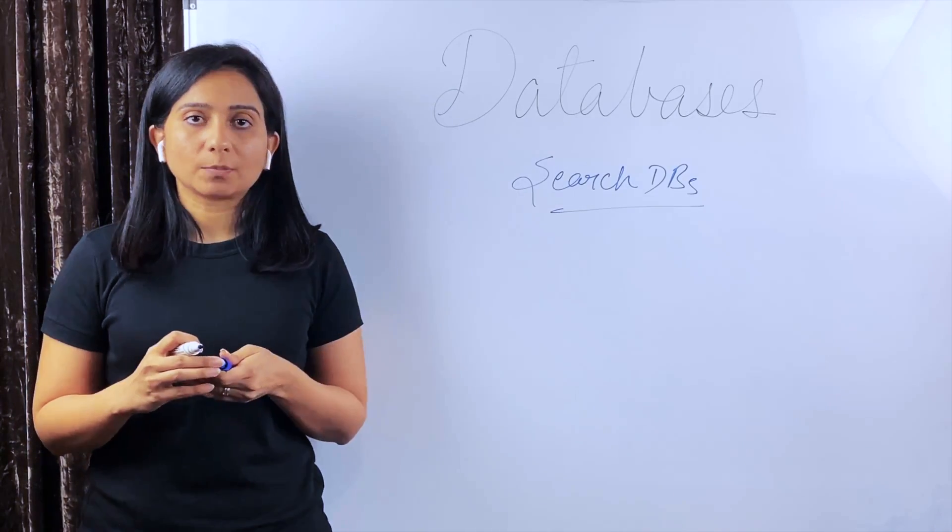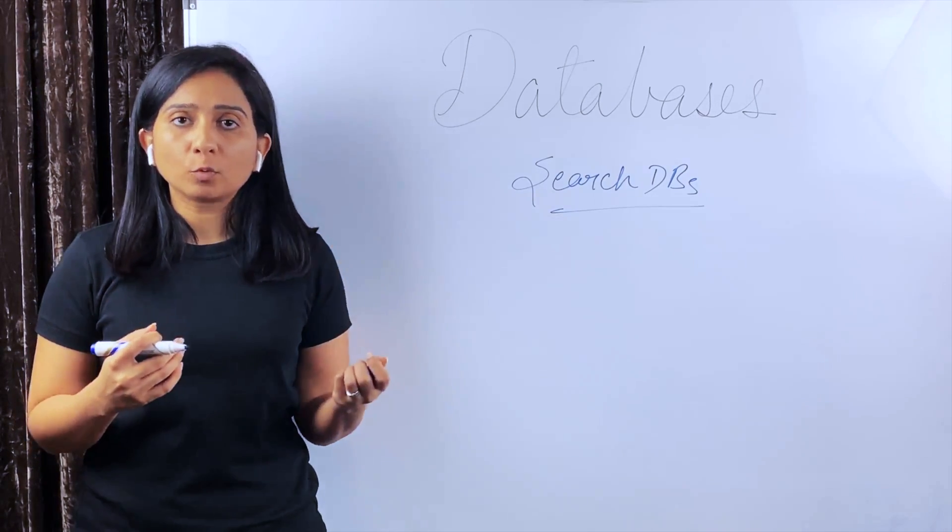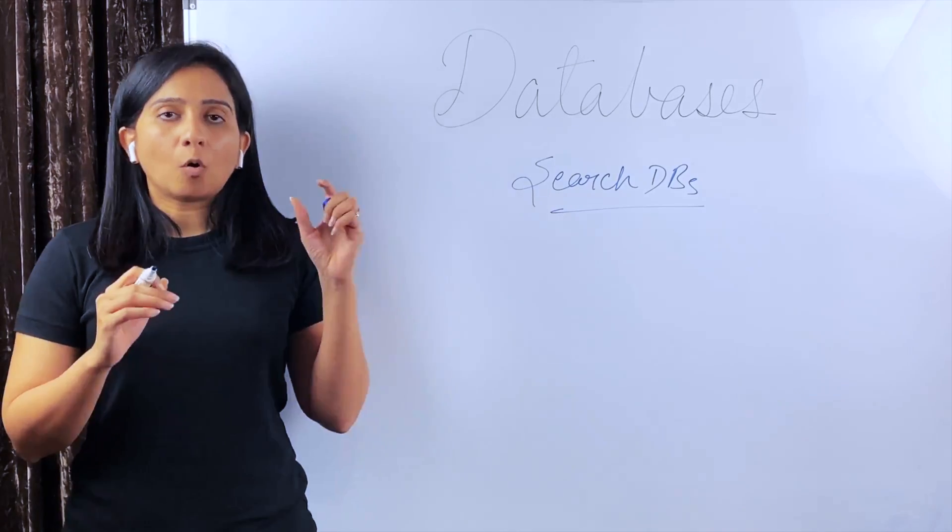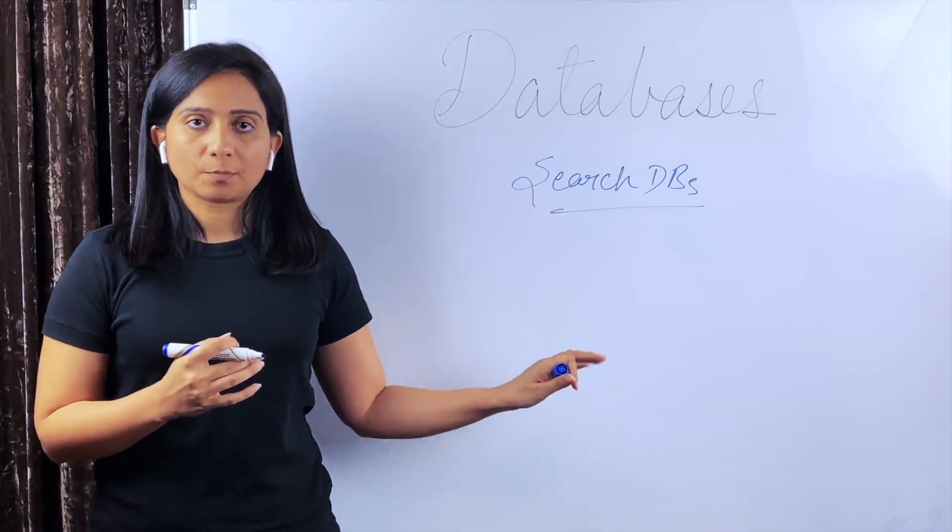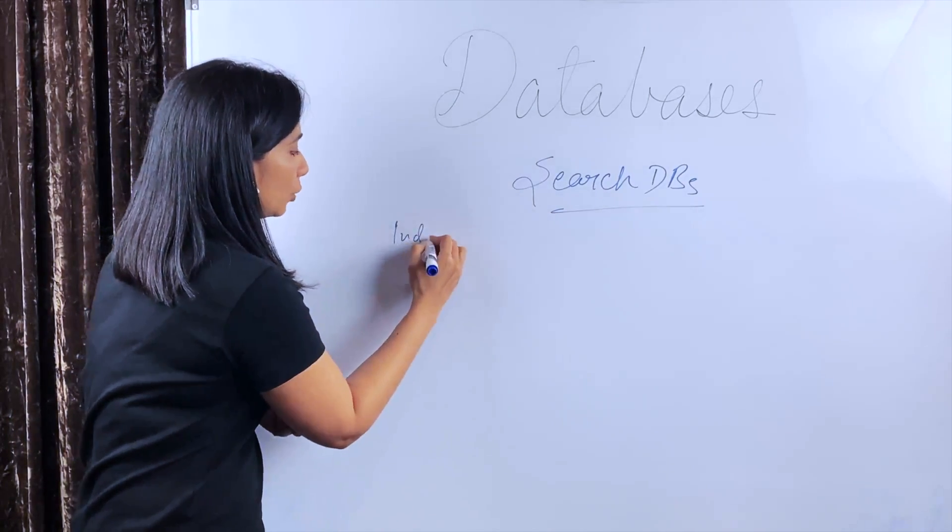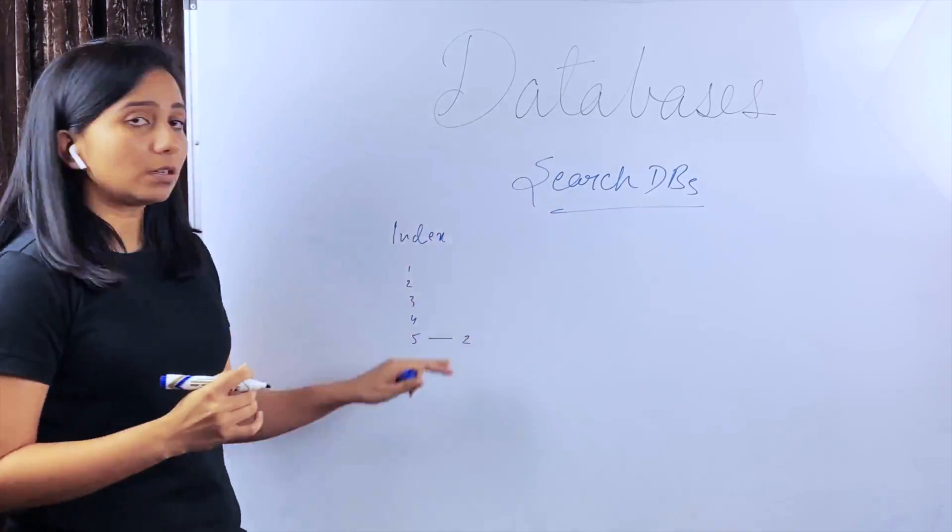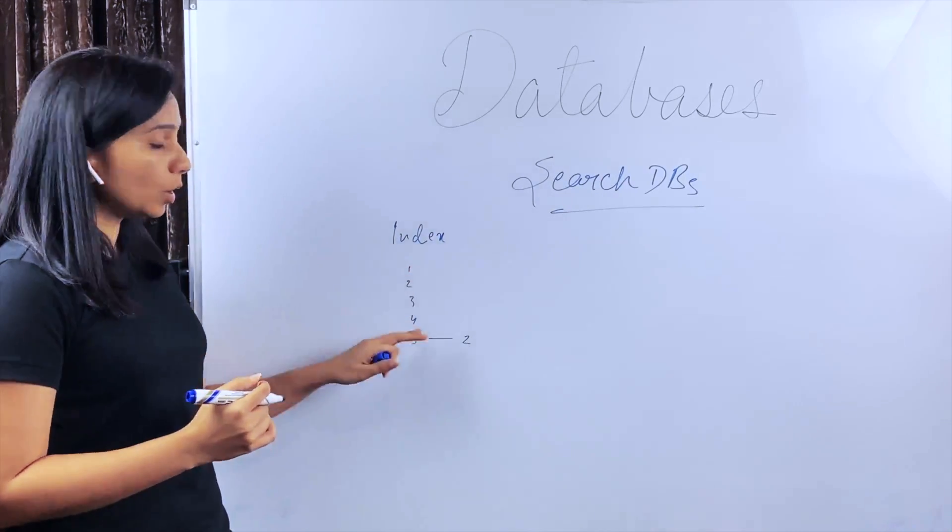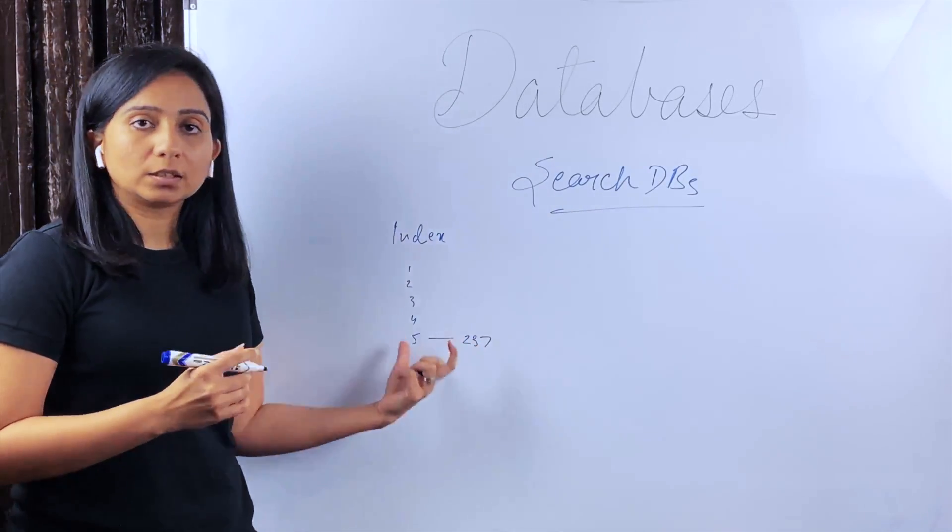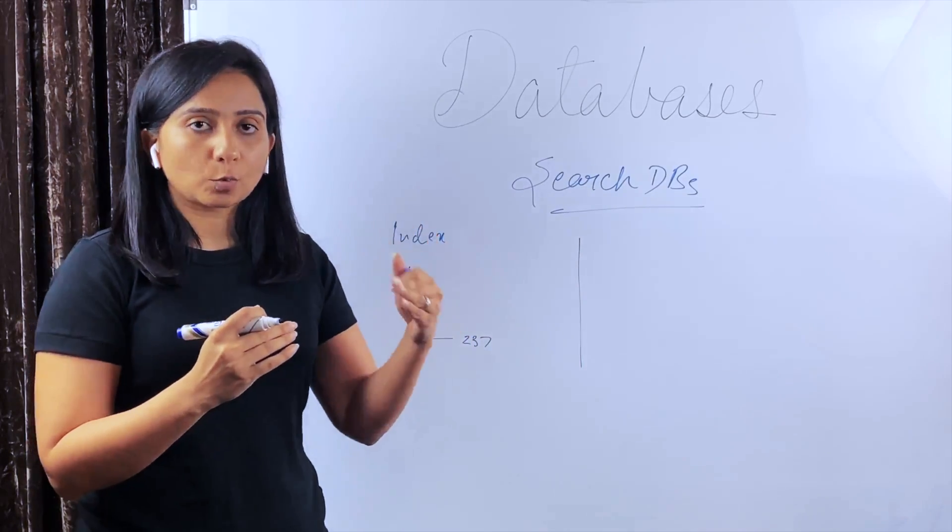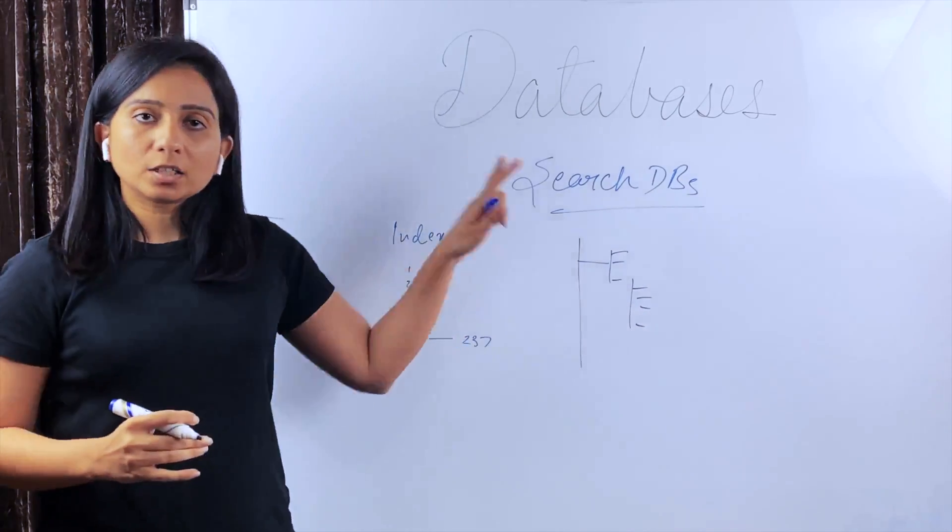Now let's talk about search databases. Whenever you interact with any application where you search for something like for booking a flight or for booking a movie or if you're purchasing an item on Amazon, all those full text search queries are supported by data stored in search databases. For example, if you're reading a book, you usually have an index at the starting of the book. You can find out where every chapter can be accessed. So suppose if you want to go to chapter five, it will say, okay, go to page 237. So that's how you can easily access this page.